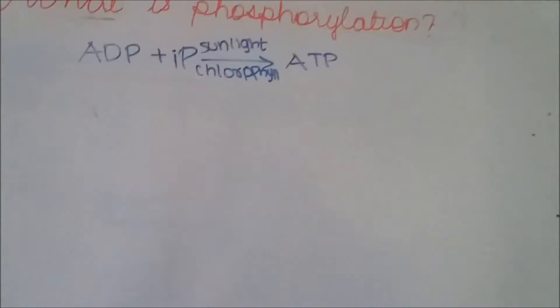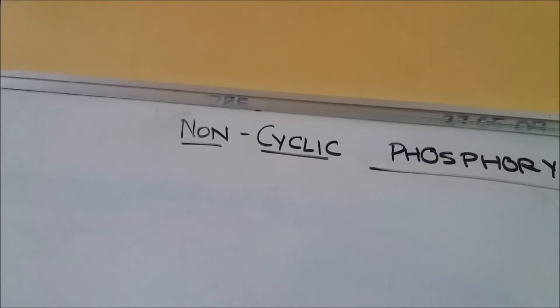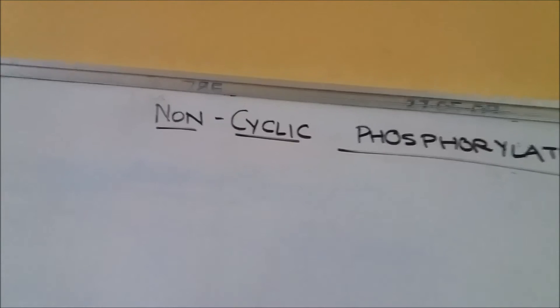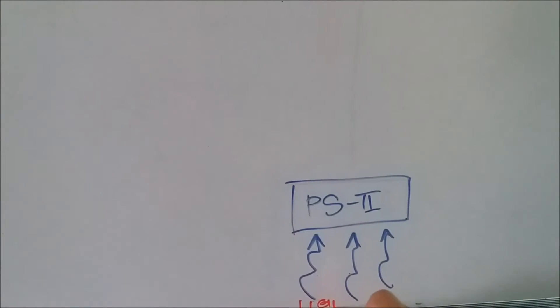In non-cyclic phosphorylation, we begin the reaction with photo excitation of PS2. PS2 is basically our pigment system 2 or photosystem 2. Light will be incident on this center causing some amount of photons to be released from here.